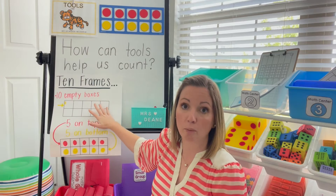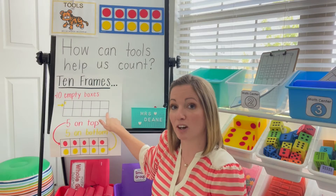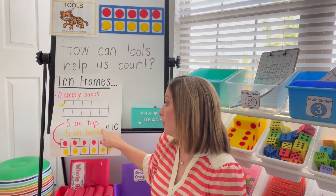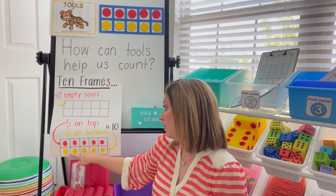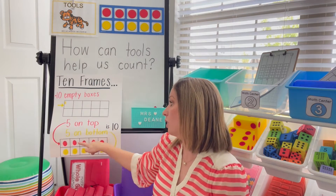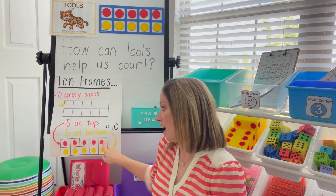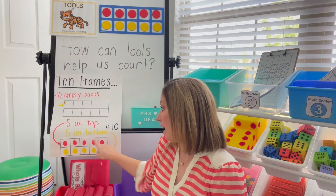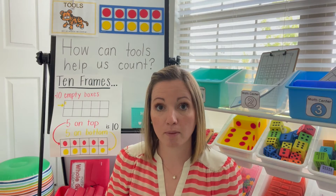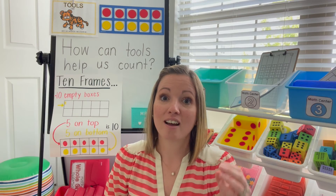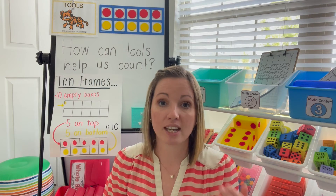Capture that thinking in an anchor chart — keep it simple so you can keep going back to it. At the top, have ten empty boxes because tens frames have ten spaces. On the bottom, capture the connection with the five frame: five at the top, five at the bottom — we know that is ten. Talk about how we can count on from five: five, six, seven, really building those connections from the five frame to the tens frame. Then build the connection to a double tens frame to build twenty, or to build teen numbers of ten and some more.